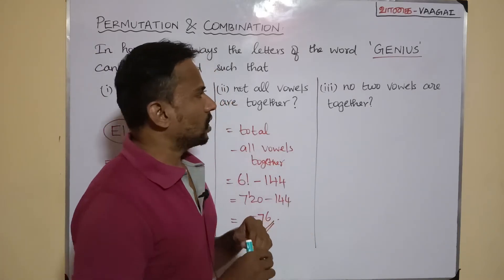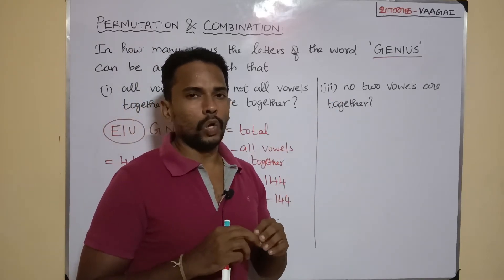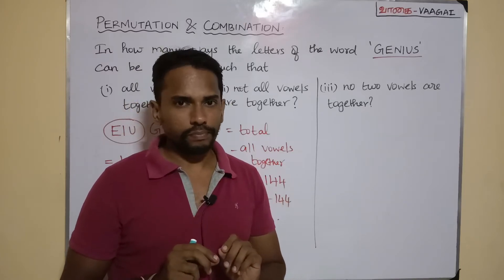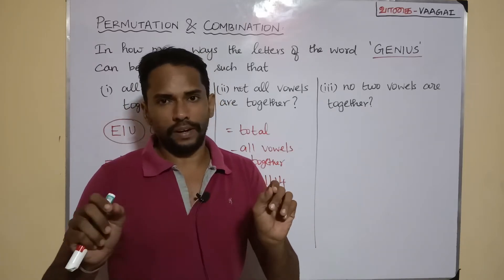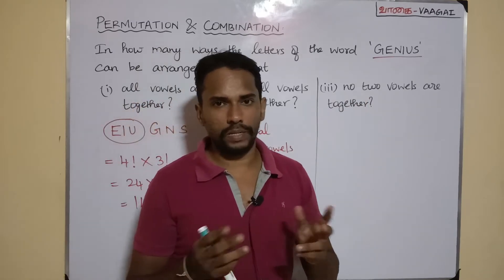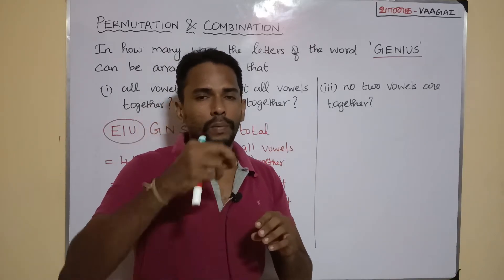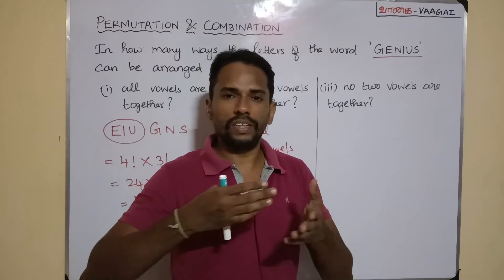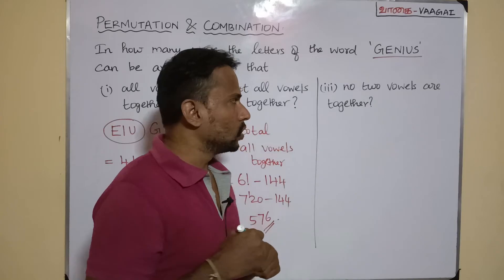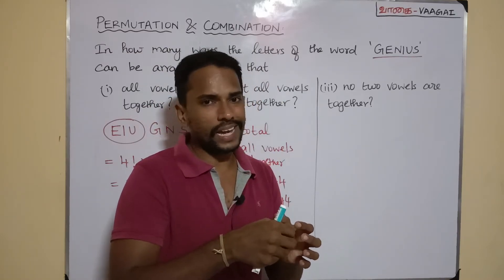The third subdivision is: no two vowels are together. We need to understand this carefully. It means that out of the three vowels, no two vowels should appear next to each other at all. Wherever vowels appear, they must be separated by at least one consonant. This also implies all three vowels cannot appear together.